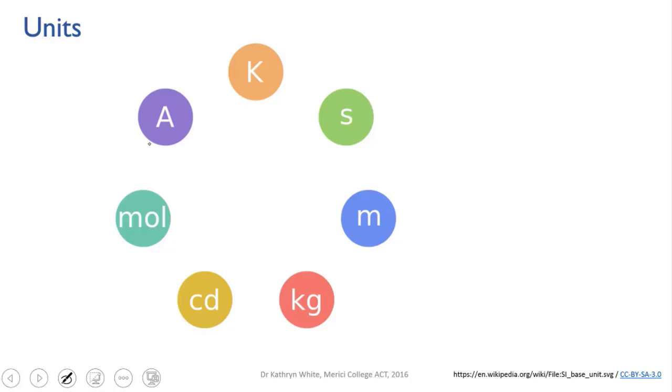Two of these units are not so common in chemistry: there's amperes, the unit of electrical current, although you may encounter this in electrochemistry, and candelas, the measurement of the intensity of light. The other five, though, will turn up frequently.